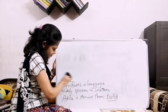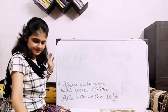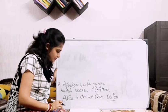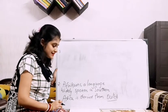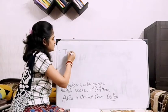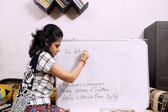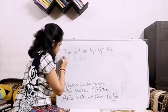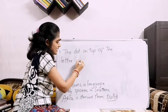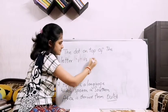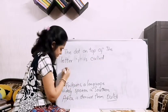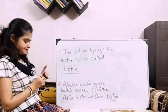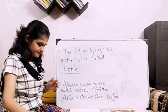Question 3: The dot on the top of the letter 'i' is called a tittle. We will write: the dot on top of the letter 'i' is called tittle — T-I-T-T-L-E. We are using double T.